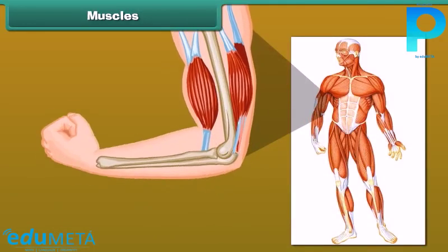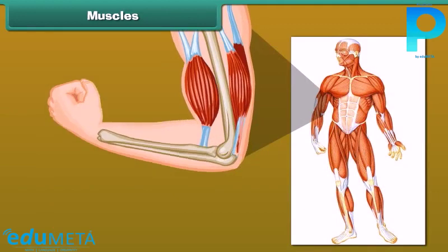Friends, make a tight fist and bend your arm at the elbow. Feel your upper arm — it feels harder. This is called the biceps. The biceps are muscles. There are about 600 muscles present in an adult human body.